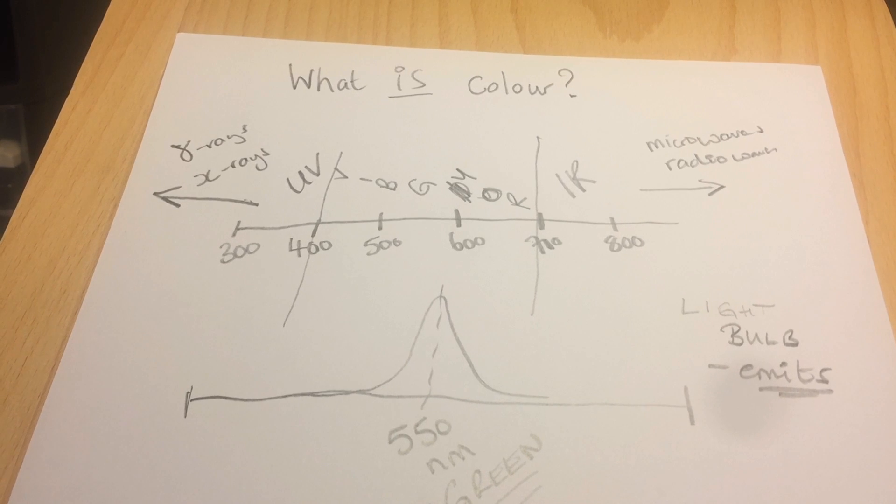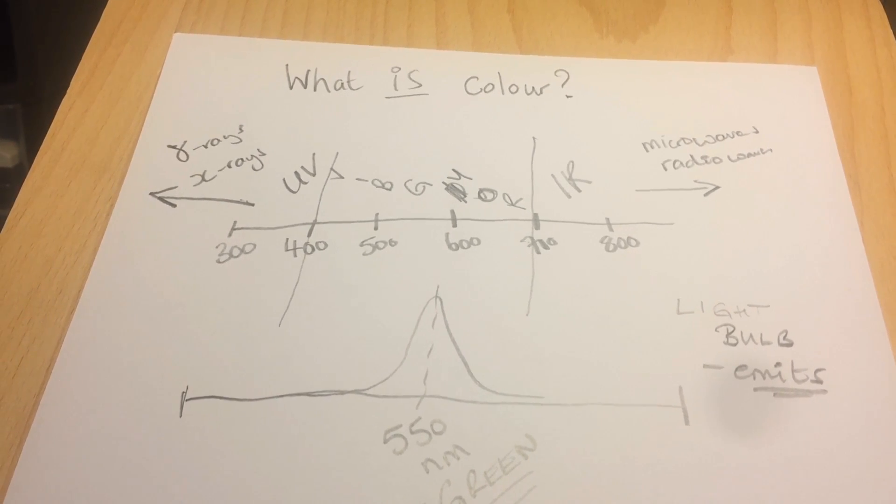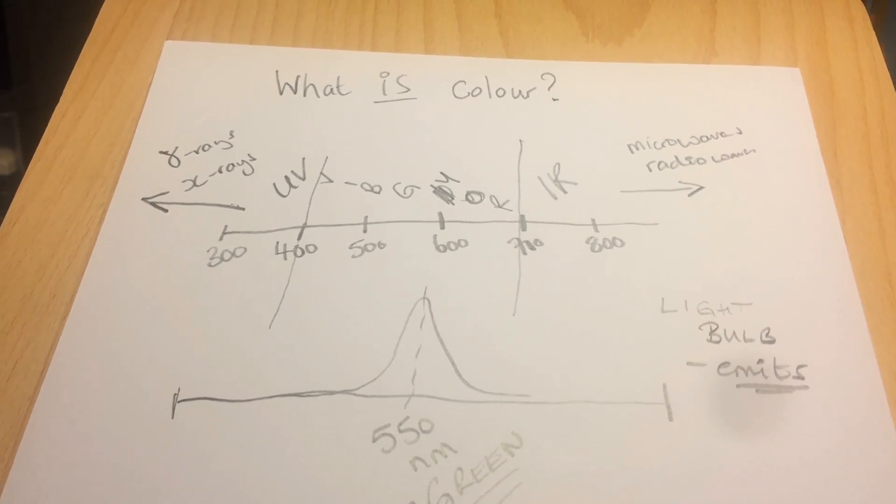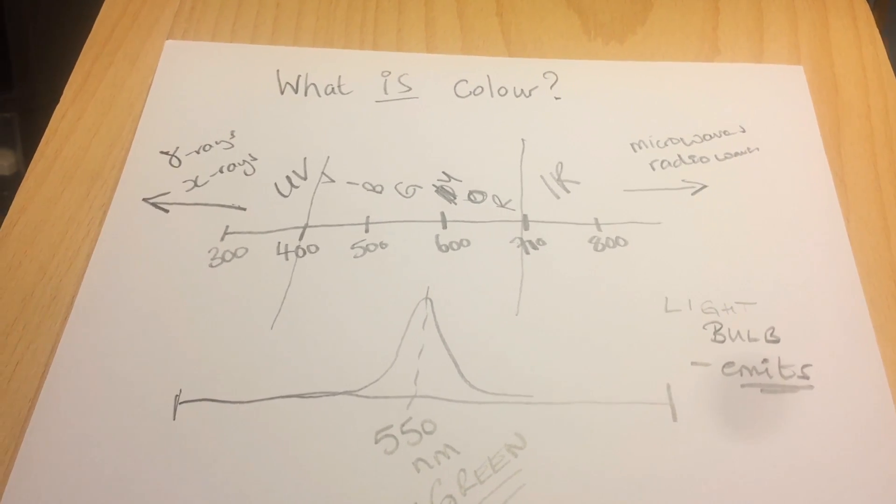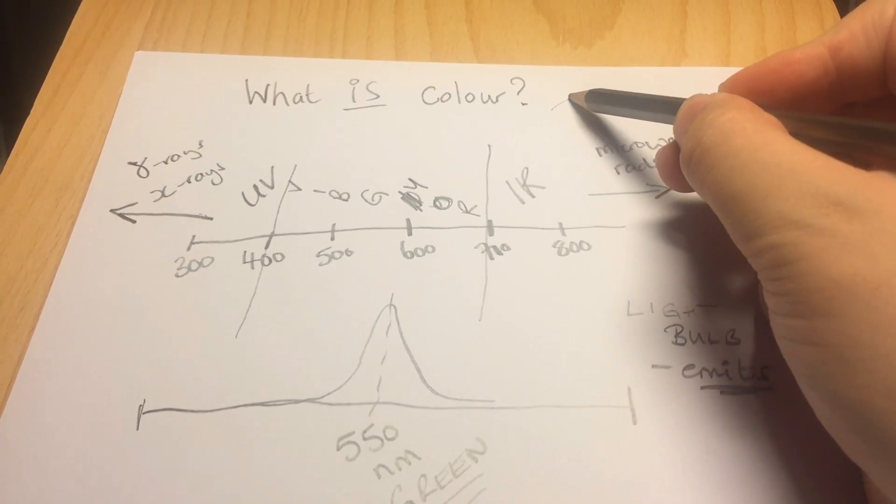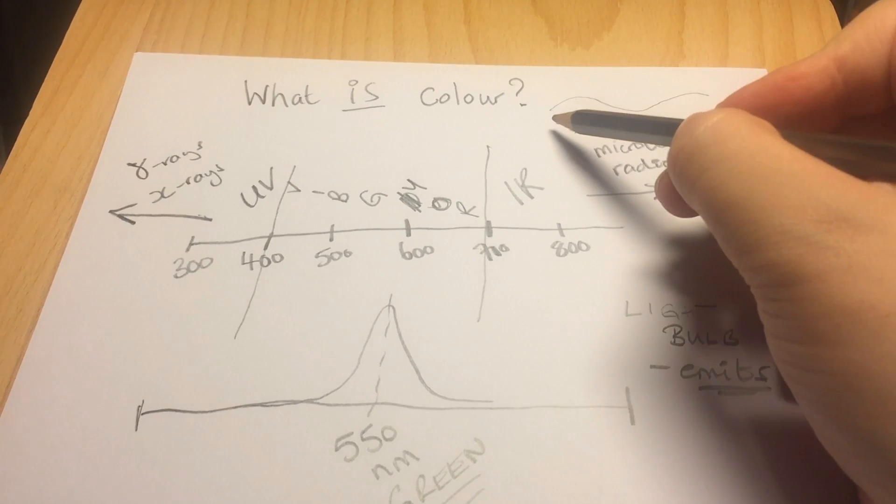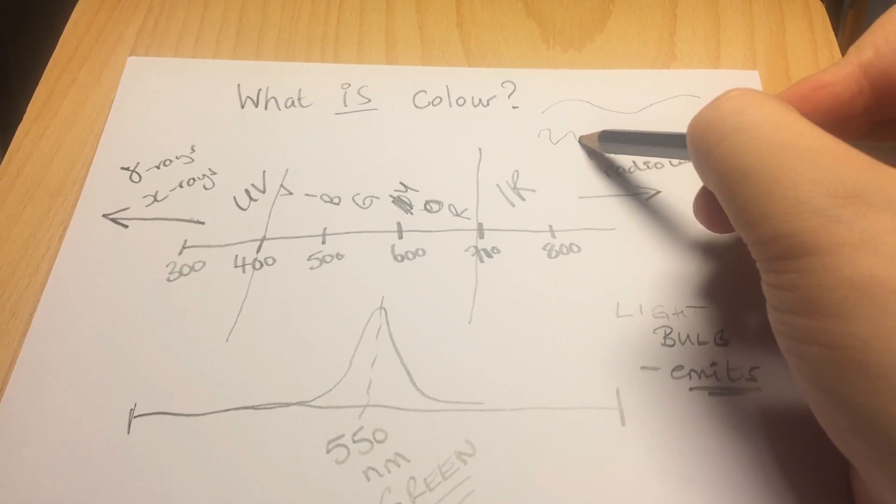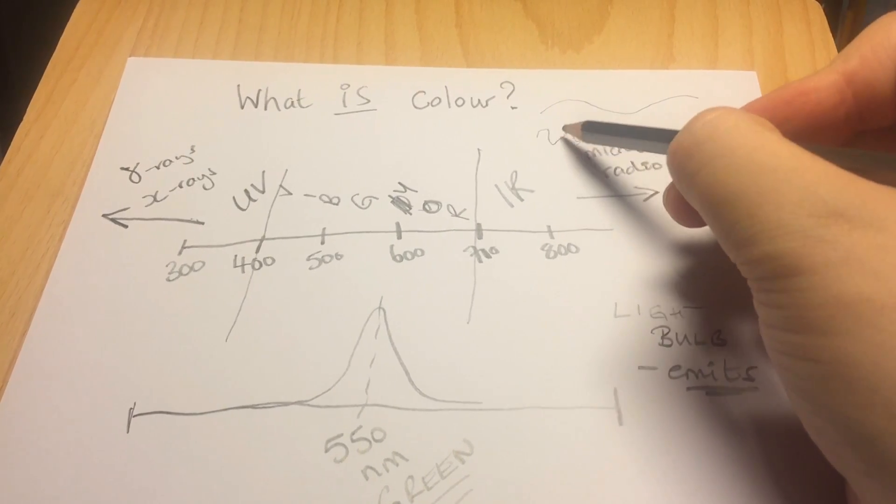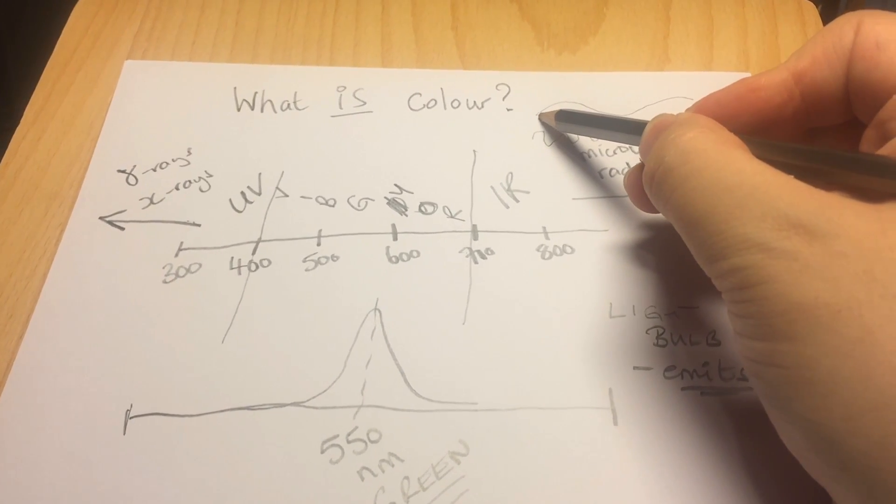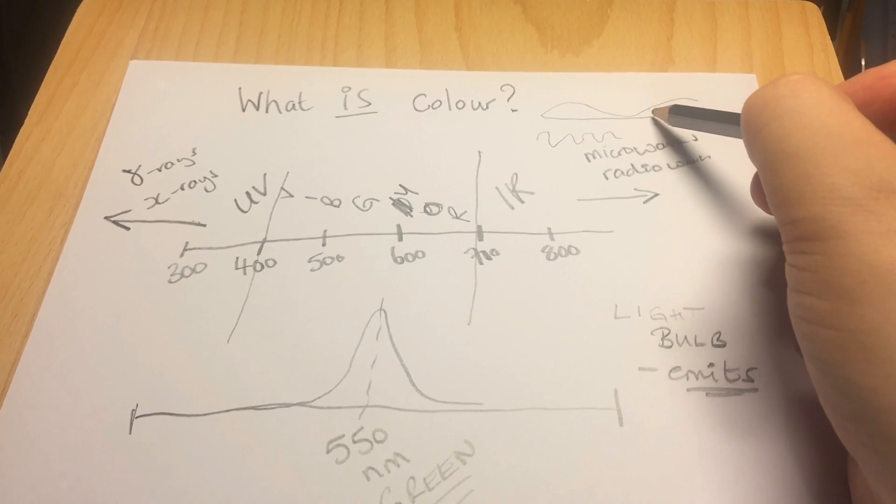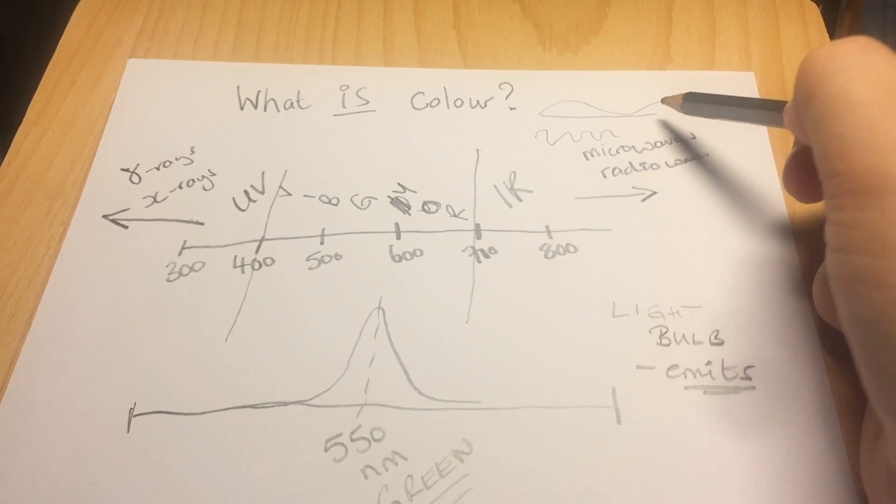So I'm going to explain today what color really is. We're going to start with light. Light is made up of waves. If we consider waves on the beach coming in, we might have waves that look like this, and waves that look more like this. The difference between them is how long they are. The length of a whole wave is the wavelength.